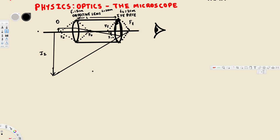In this video we are going to see how to calculate the magnification of a microscope. In a microscope we have an objective lens and an eyepiece lens. The focal length of the objective lens is given as 5 centimeters and the focal length of the eyepiece lens is given as 2 centimeters. Let's first look at the diagram.